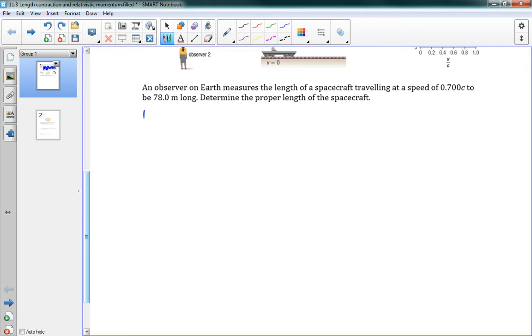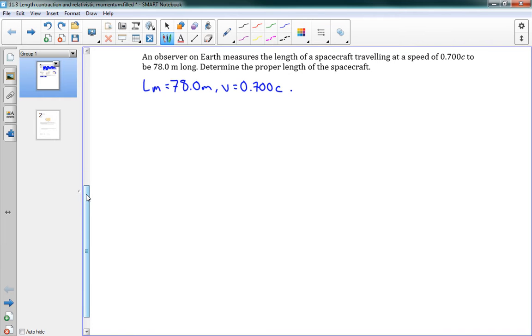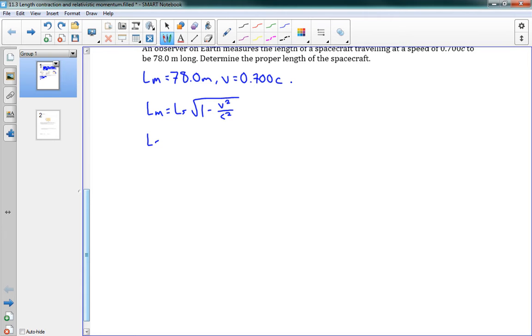We're told that Lm is equal to 78.0 meters, and V is equal to 0.700c. We have our equation here: Lm is equal to Ls square root 1 minus V squared over C squared. Now we want to solve for Ls.